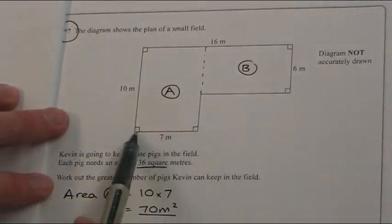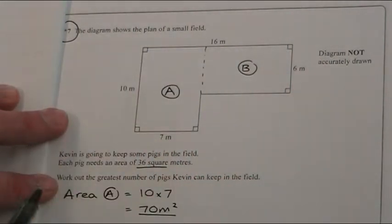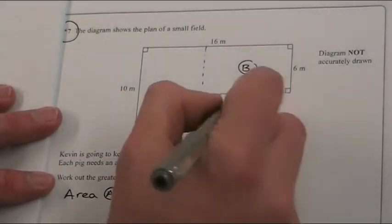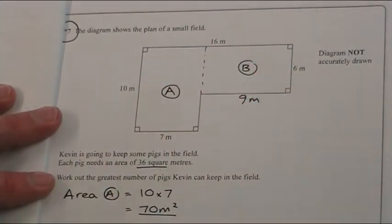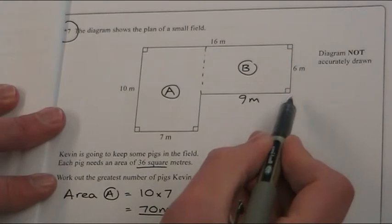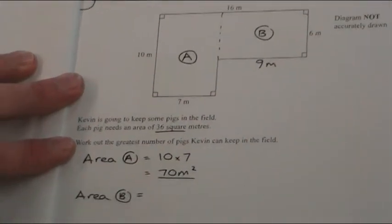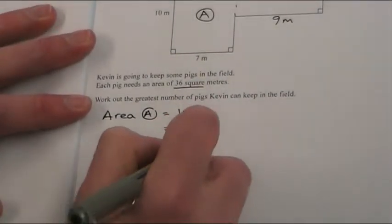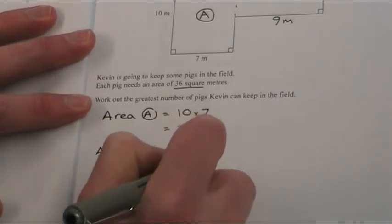This plus this is exactly the same as this part here. So if I take away 7 from the 16, I get 9. So now I've got 9 and 6. Let's go back down here: 9 times 6 is 54 square meters.